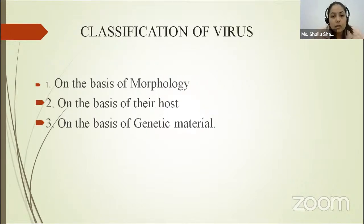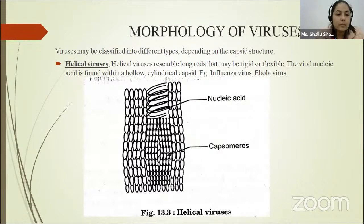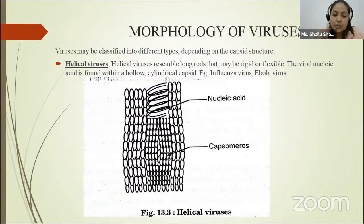Now the classification of virus. Viruses are classified on the basis of morphology, on the basis of their host, and on the basis of their genetic material. Virus may be classified into different types depending on the capsid structure. The capsid is the protein shell of a virus, including its genetic material.